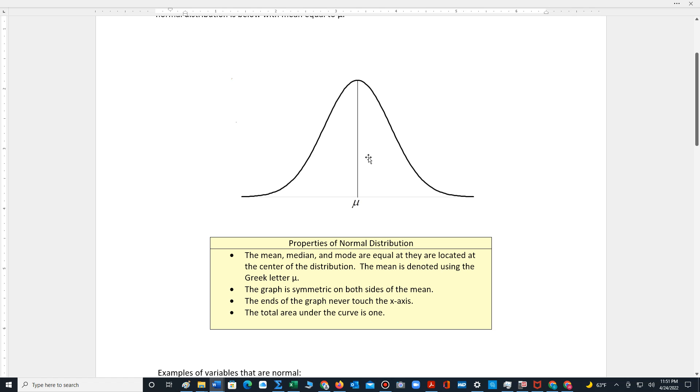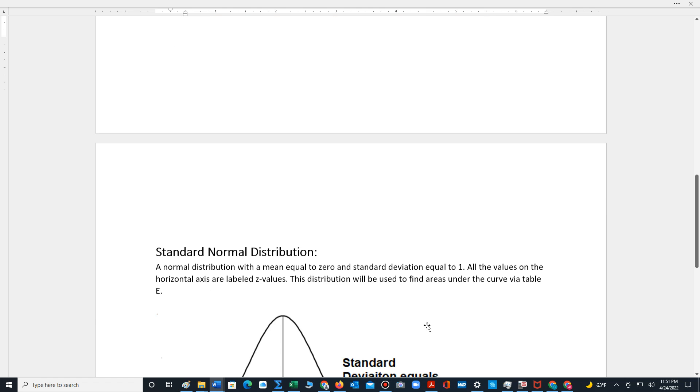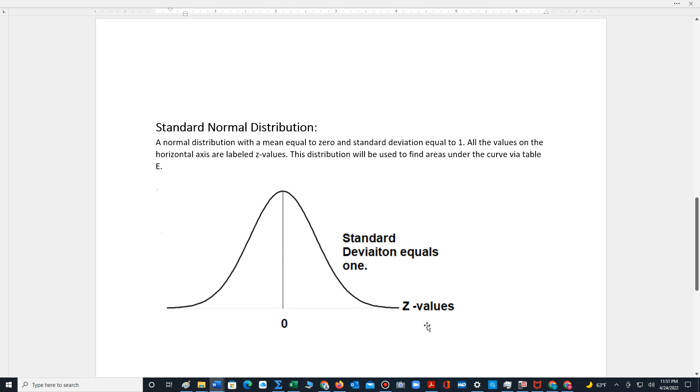We use areas under the normal distribution to represent probabilities. To look up these areas, we use a special version of the normal distribution.